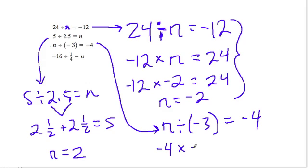A negative times a negative gives us a positive, and then 3 times 4 is 12, so it's positive 12. So here, n equals positive 12, and that makes sense. Positive 12 divided by negative 3 gives us a negative 4.